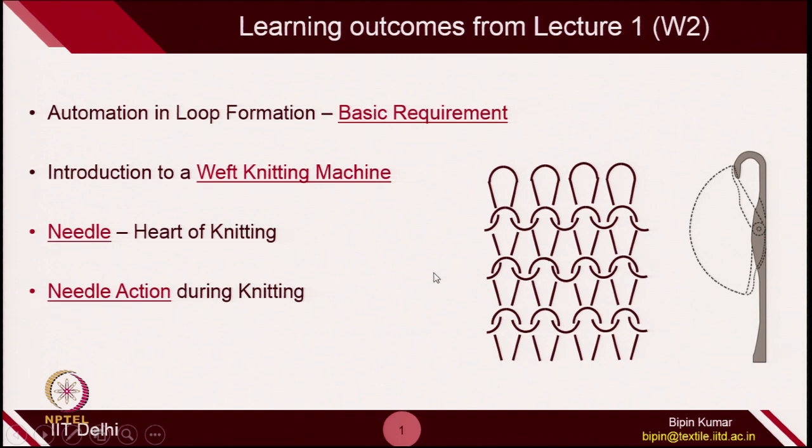Now comes today's lecture. What we are going to learn in today's class: first, we want to learn about automation — why there is a need for automation and how we can automate the process of hand knitting. I am going to introduce the basic weft knitting machines which are widely used across the world. We are also going to learn about the most important element on a knitting machine, which is the needle — the heart of knitting. I will give more emphasis on understanding needle functions and the actions during loop formation inside the knit structure.